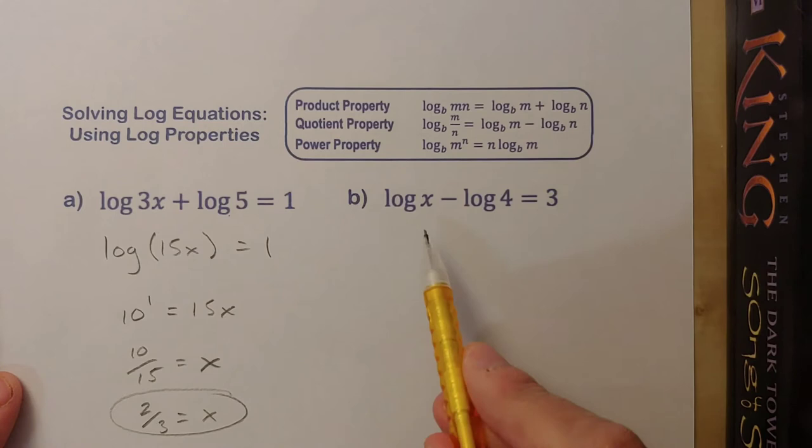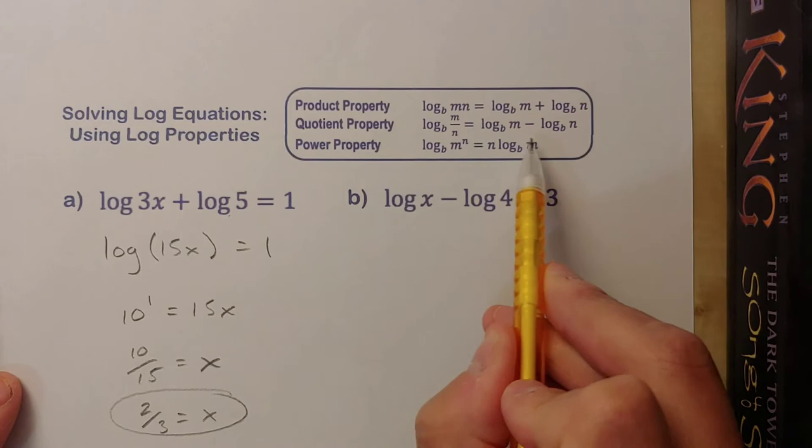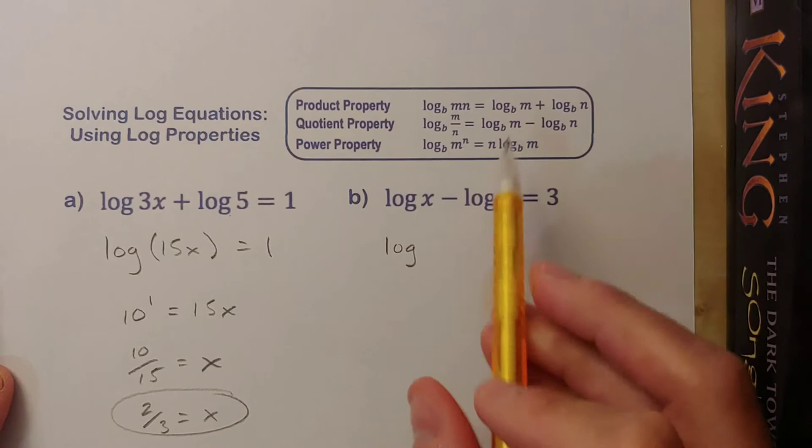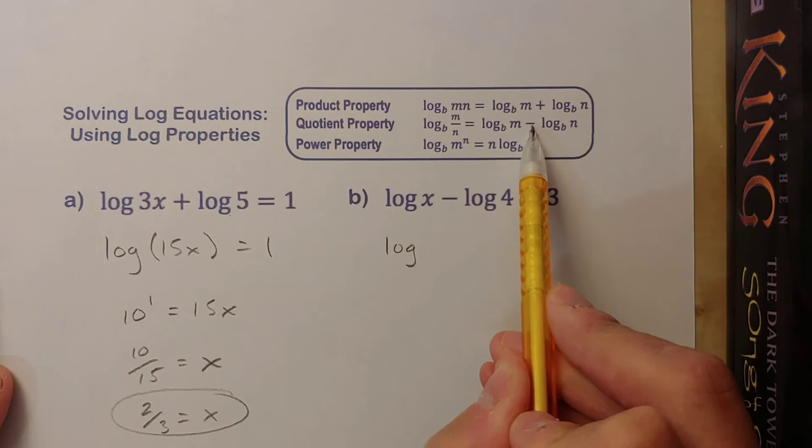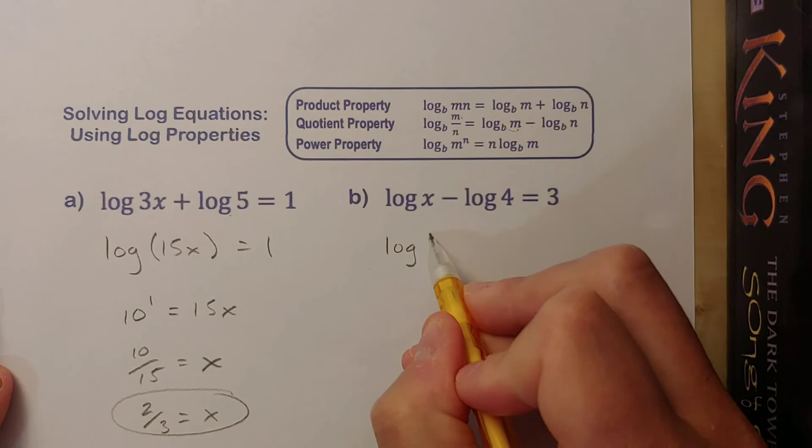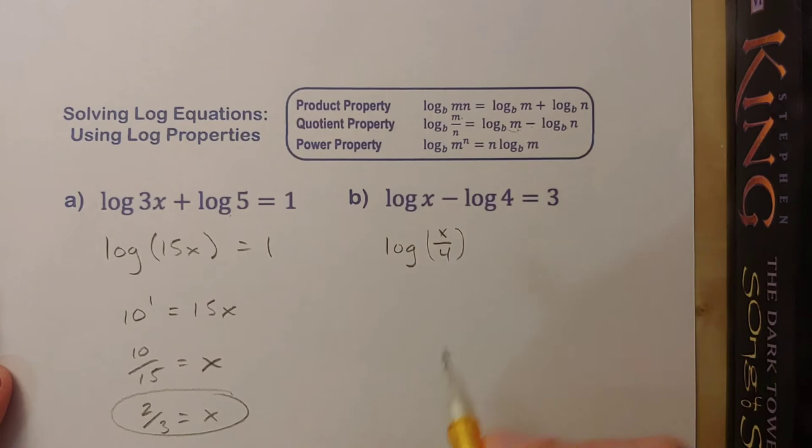Try this one. Same thing, if we can combine these logs together, I can convert to exponential form and solve. Let's use the quotient property, which says the difference of two logs can be rewritten as a quotient. Now be careful here with the quotient property, the order is important. It's this first one minus the second one, and the first term goes on the numerator. So if I'm doing log x minus log 4, it's this x that's going to go in the numerator, and the 4 will go in the denominator. So log base 10 of x over 4 equals 3.